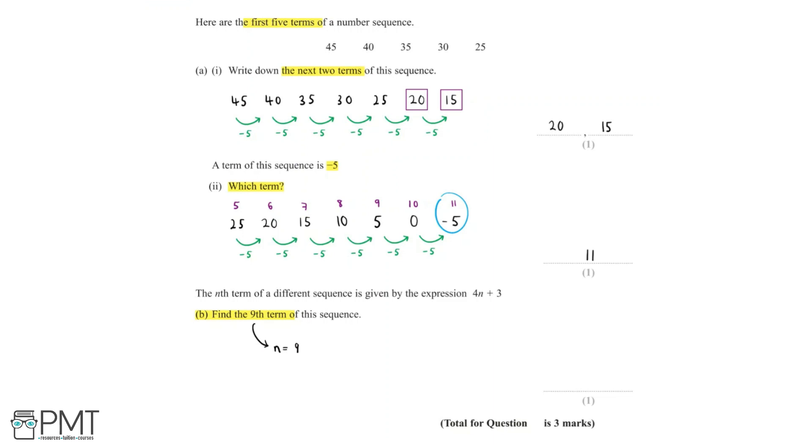4n + 3 would be equal to 4 multiplied by 9 plus 3. 4 times 9 is 36. And so 4 multiplied by 9 plus 3 is equal to 36 plus 3, which is equal to 39. And so we've found that the 9th term of this sequence is equal to 39.